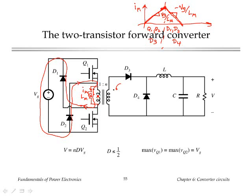In the process, we reset the core. When the current gets back to zero, then D1 and D2 will turn off. We're in a discontinuous mode. At that point, everything on the primary side is off. The only thing that keeps conducting is D4 conducts the output current for the remainder of the interval.